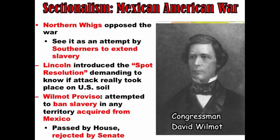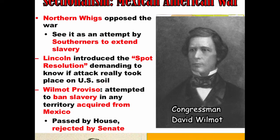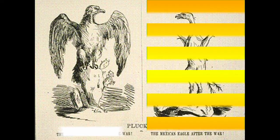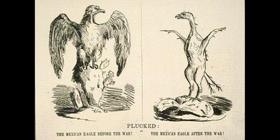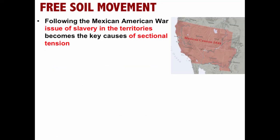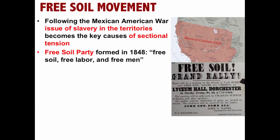While there was resistance to the Mexican-American War, it was a huge success for US expansion goals — not so much for Mexico. Getting all this territory from the Treaty of Guadalupe Hidalgo, you would think, would be an unqualified win, but following the war, the issue of slavery in the territories became the key cause of sectional tension. The Free Soil Party was formed in 1848 with a platform of free soil, free labor, and free men. They wanted no slavery in new land to the West and wanted to keep the West an opportunity for whites only.